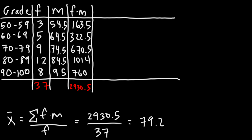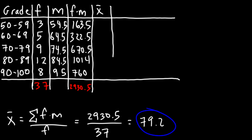Does this answer make sense? The bulk of the data is in the 70–89 range, with most students scoring between 70 and 89, so a mean around 79 to 80 makes sense. We'll record the mean as 79.2 in the next column — that's a rounded value.